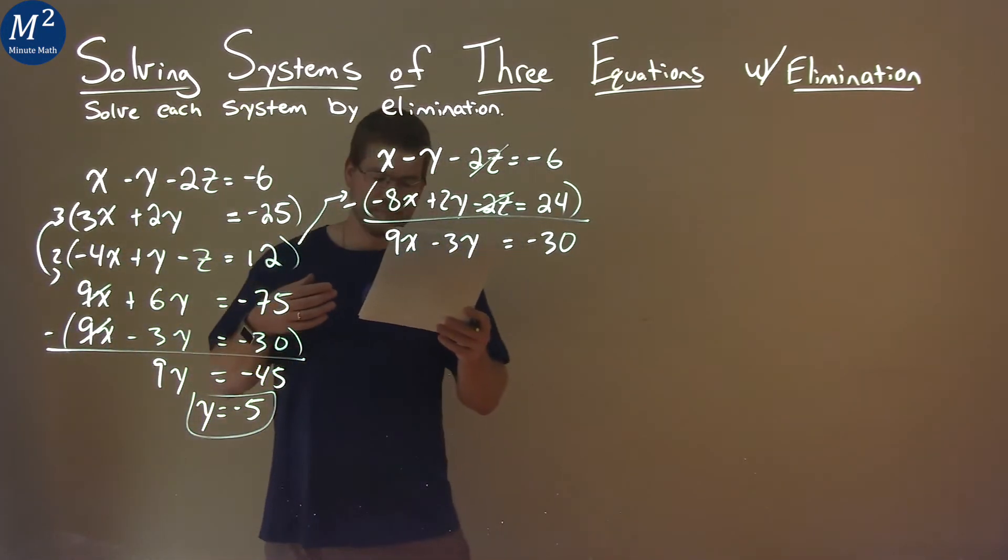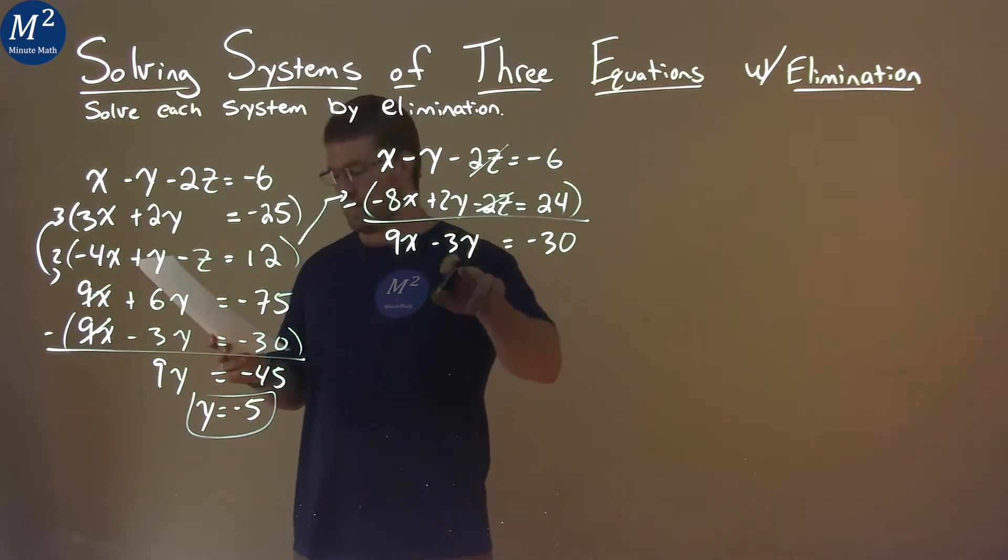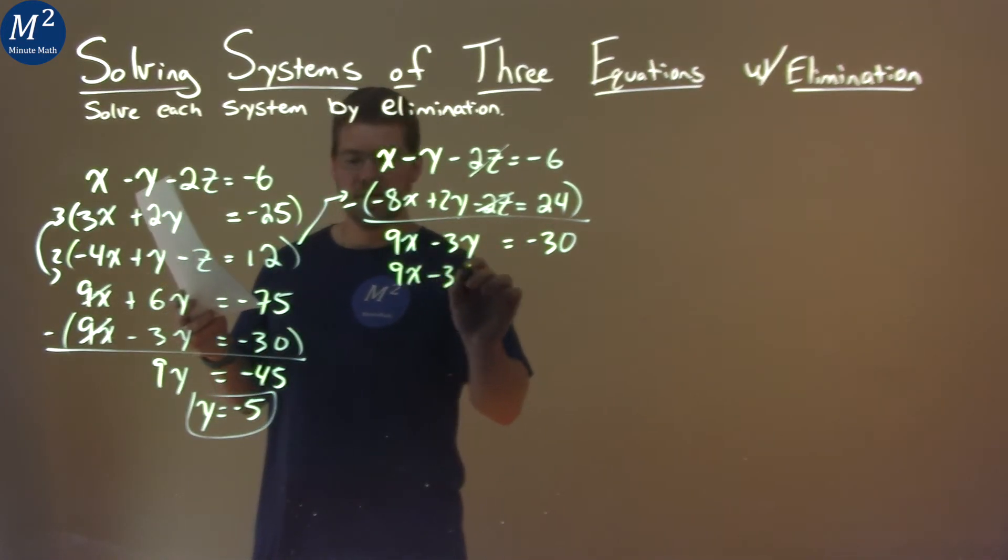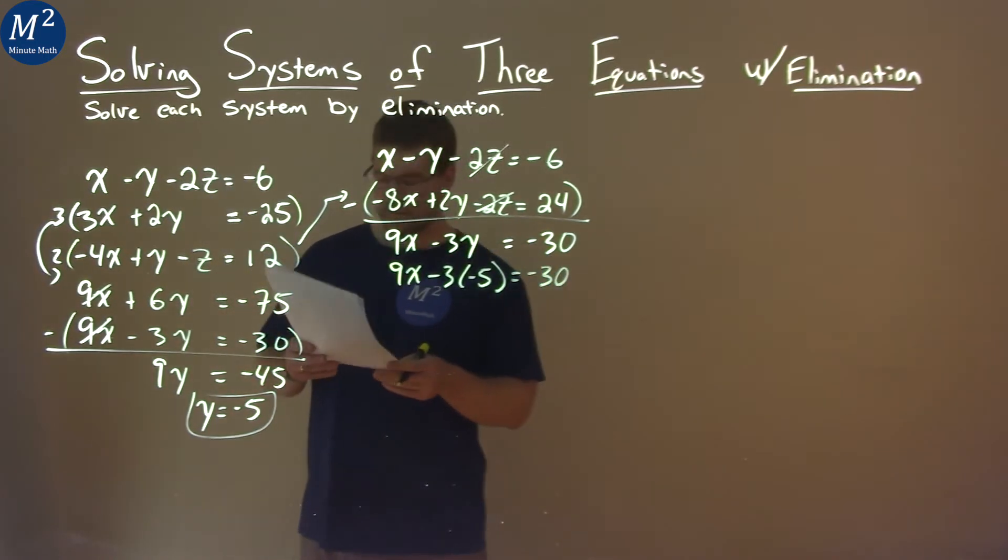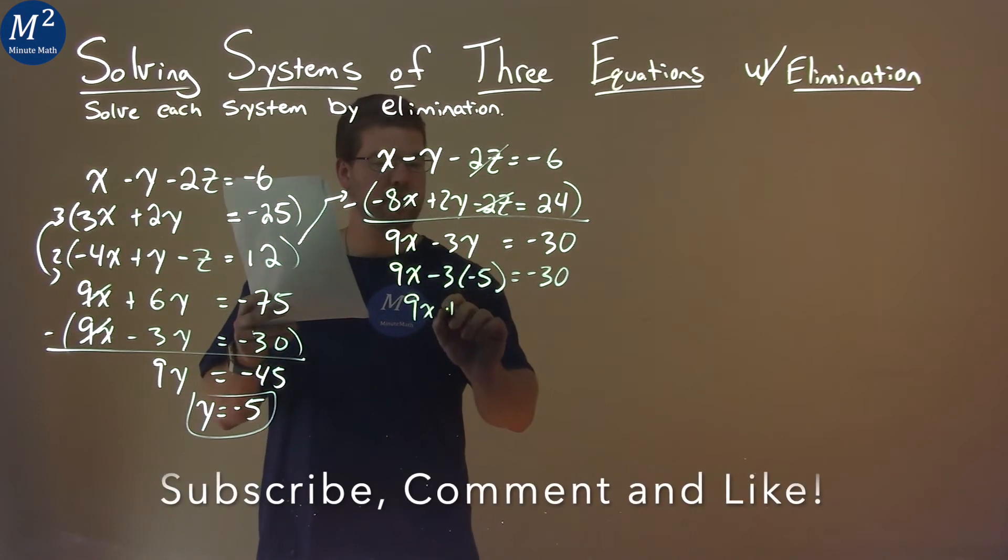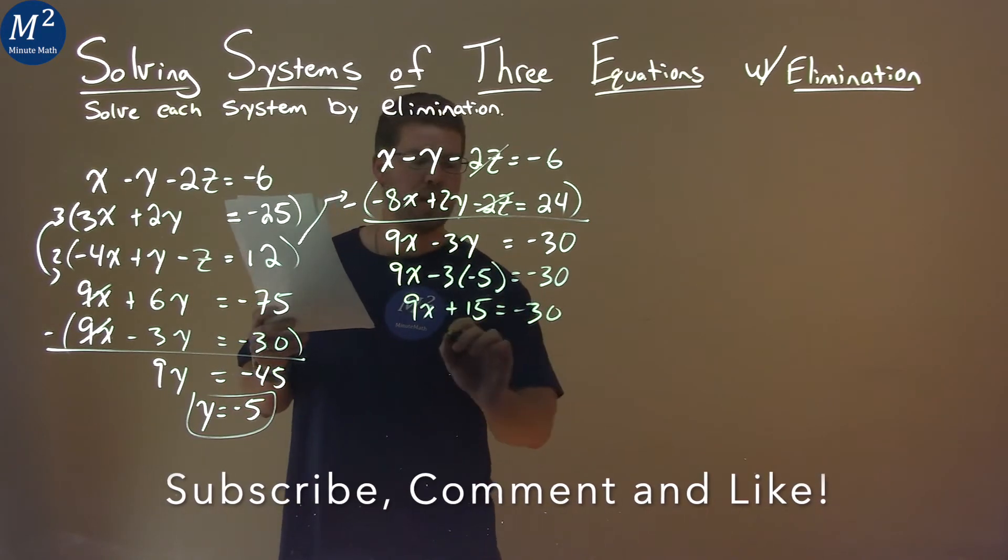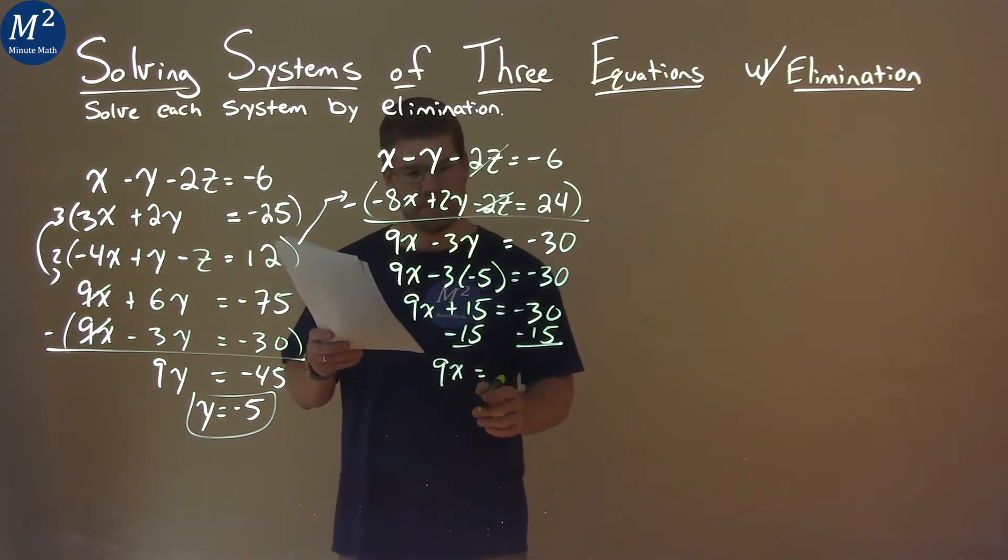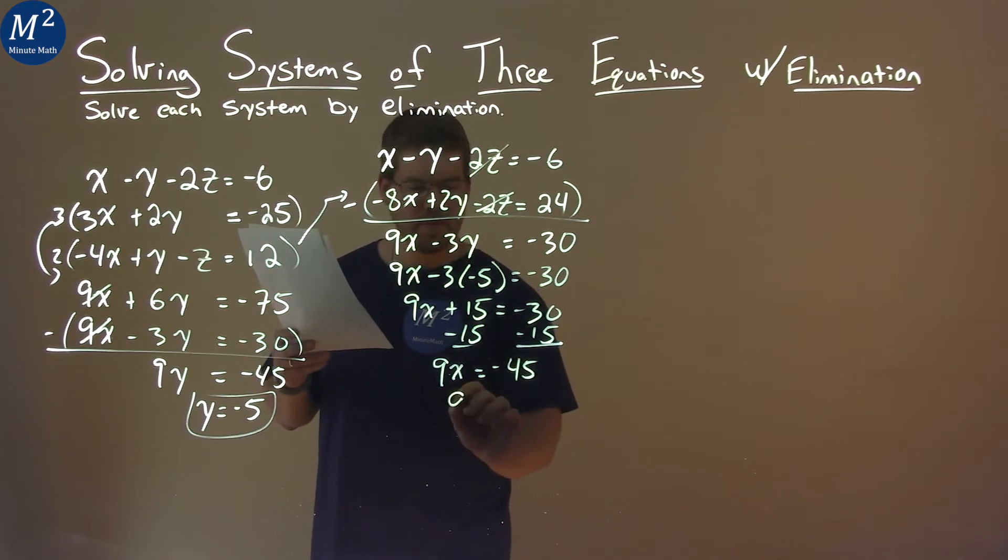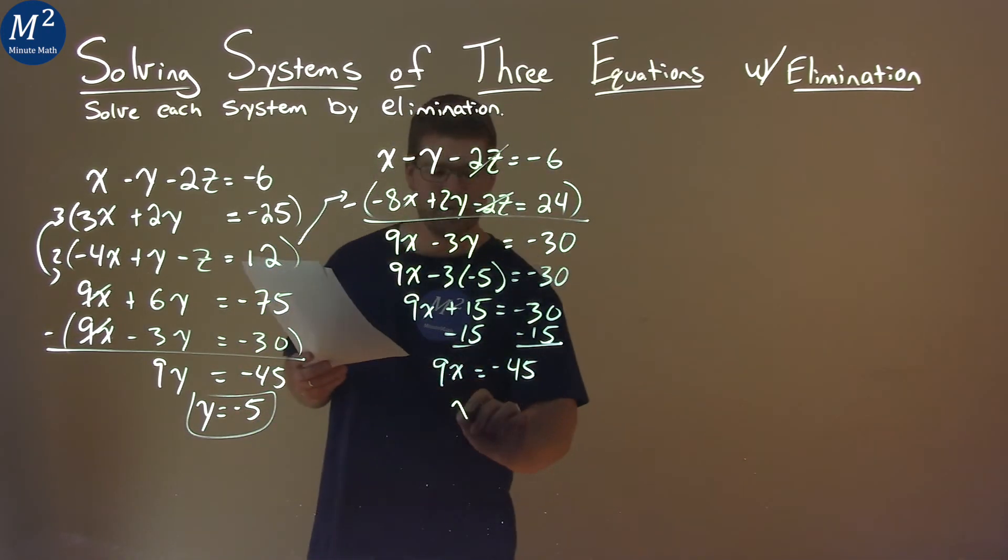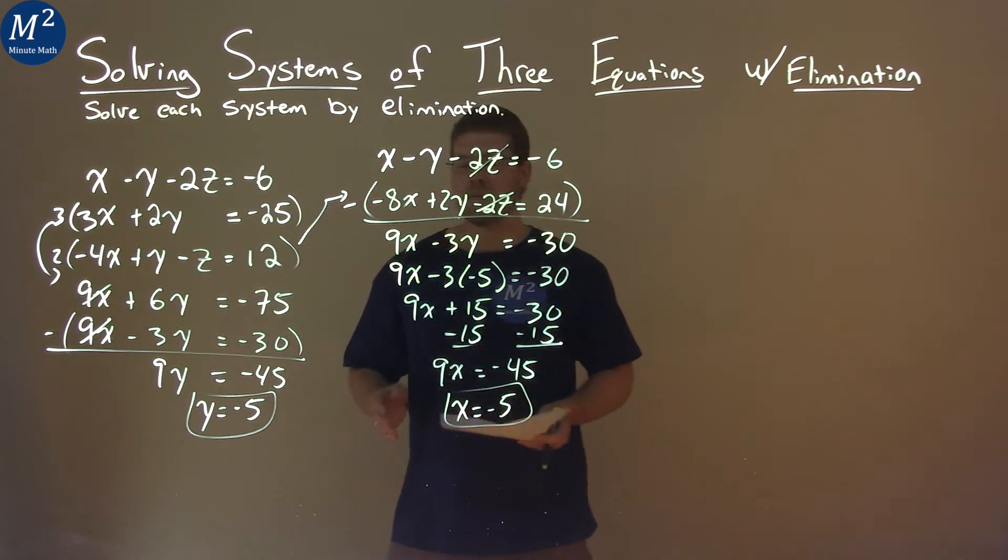So where do we go from here? We can take one of our equations and plug negative 5 in for y and solve for x. We have 9x minus 3 times negative 5 equals negative 30. 9x plus 15 equals negative 30. Subtract 15 from both sides. 9x equals negative 45. Divide both sides by 9, and x equals negative 5. So we have an x value and a y value.